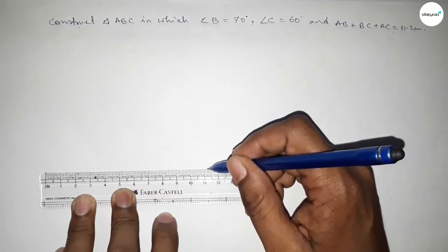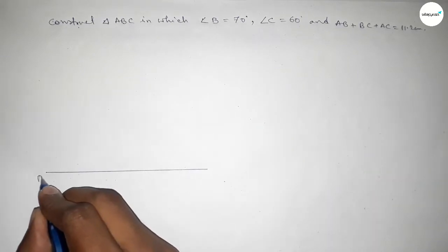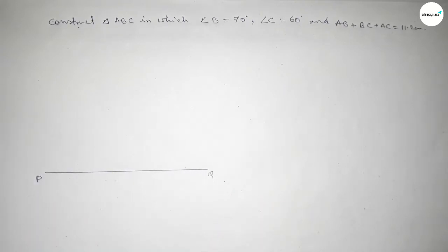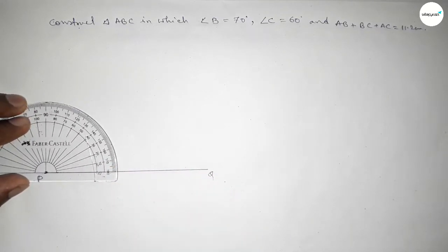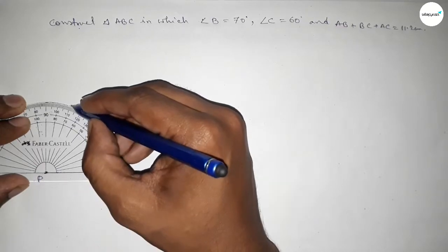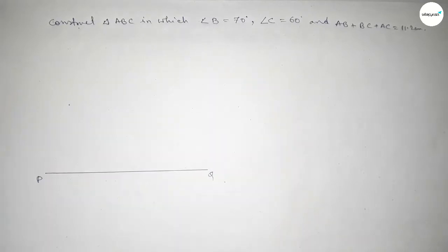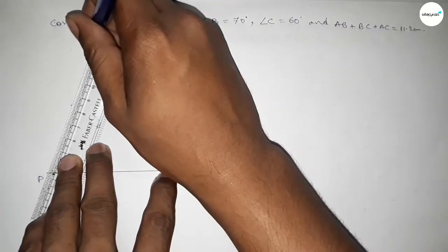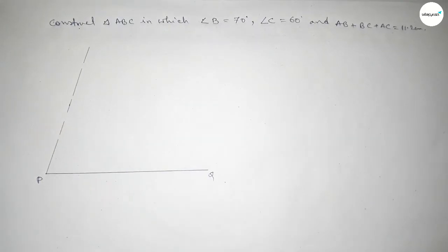This is the 11.2 centimeter line, and taking here point P and here Q. So first we have to draw a 70 degree angle on the point P by using a protractor, by this way. So this is the 70 degree angle. Now joining this to get here a 70 degree angle.